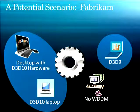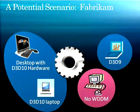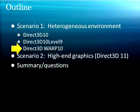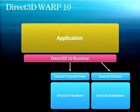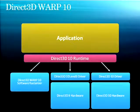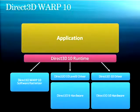So we've got our users with D3D10 hardware, and our users with D3D9 hardware. What's left is the folks who don't have WDDM 1.0 capable hardware at all. That brings us to Direct3D Warp 10. We have our application, the runtime talking to the D3D10 hardware, talking to the D3D9 hardware, and now we're going to add one more thing: the Direct3D Warp 10 software rasterizer. That's all it is — a fully software-implemented rasterizer.